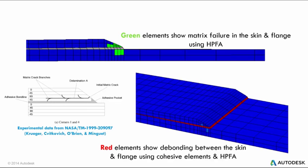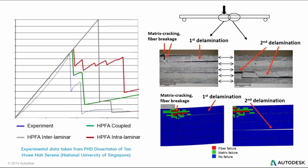The ability to capture both inter- and intra-laminar failure simultaneously in an analysis can provide huge benefits. In the example shown on the screen, a three-point bend specimen is simulated using the inter- and intra-laminar failure methods included with Autodesk Helios PFA.